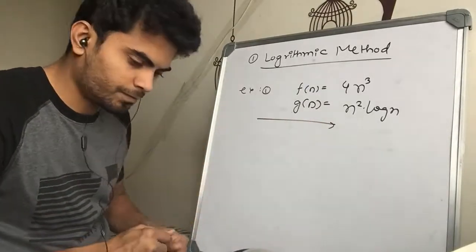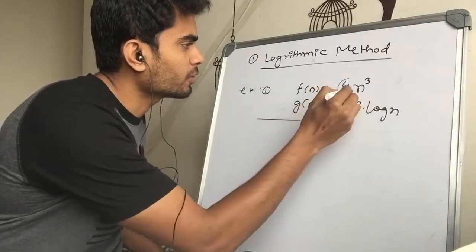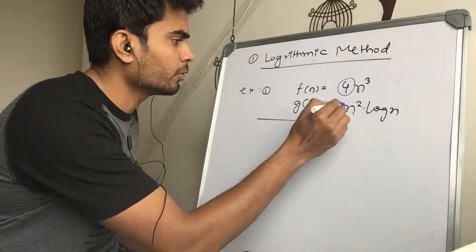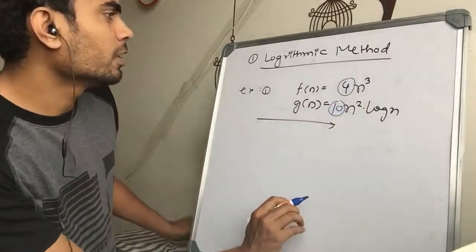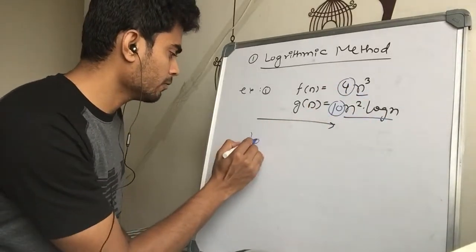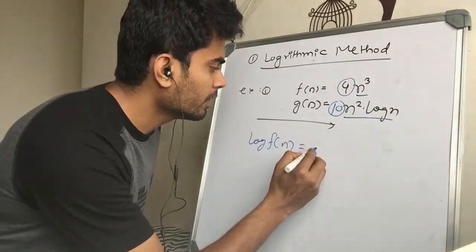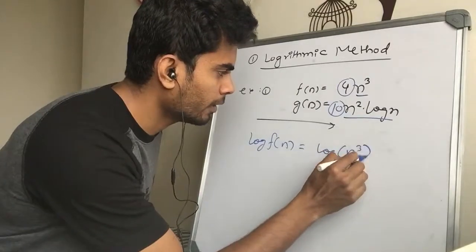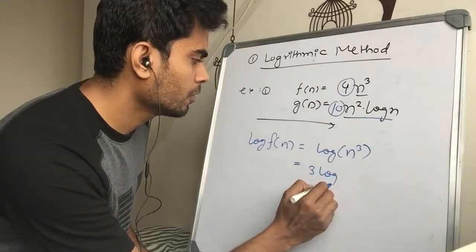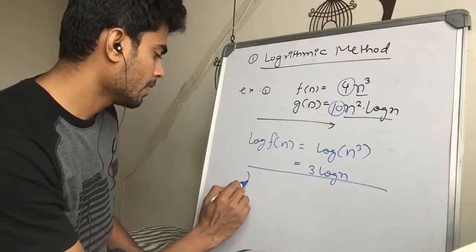We deal with the log of f(n). We are ignoring the constant 4, so we have log of n³, which gives us 3 log n. That's it — this is done for log of f(n).